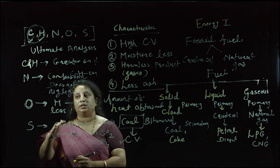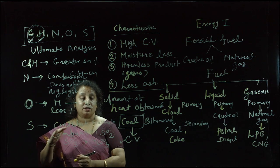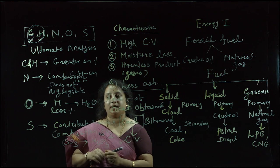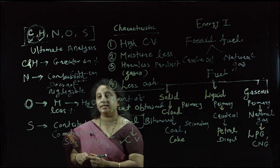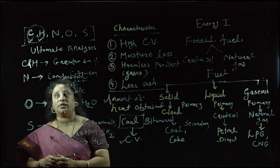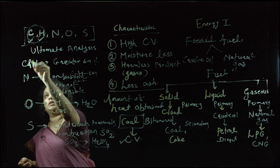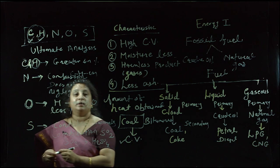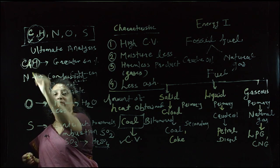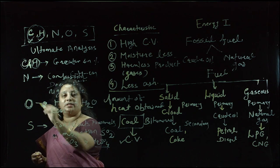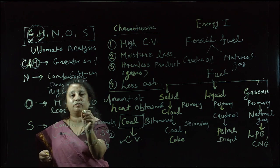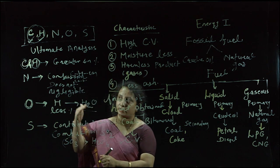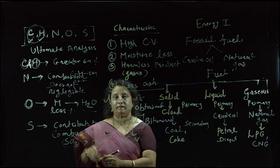To summarize: sulfur contributes towards calorific value but produces harmful gases. Carbon and hydrogen are the most important constituents — their percentage should be greater. Nitrogen should be negligible. Oxygen percentage should be less because it forms moisture with hydrogen. The role of each constituent in combustion calculations will be discussed in detail in the next lecture.